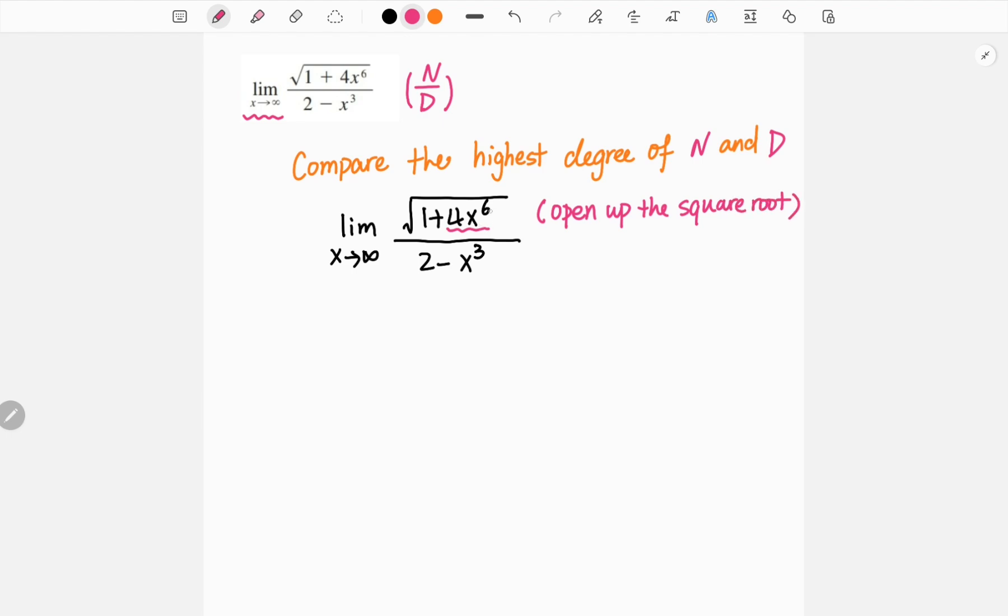Since x to the 6 is a very large number, we can ignore all the other terms. And when we open up 4x to the 6, we get 2x³. For the bottom we have 2 minus x³, and that means we only need to write the highest degree of the denominator, which is negative x³.